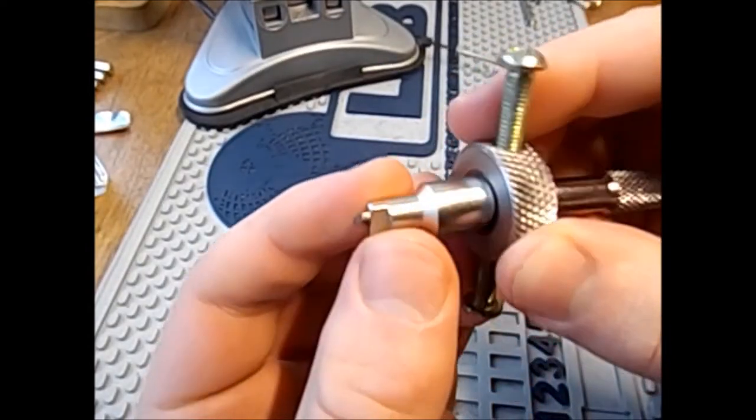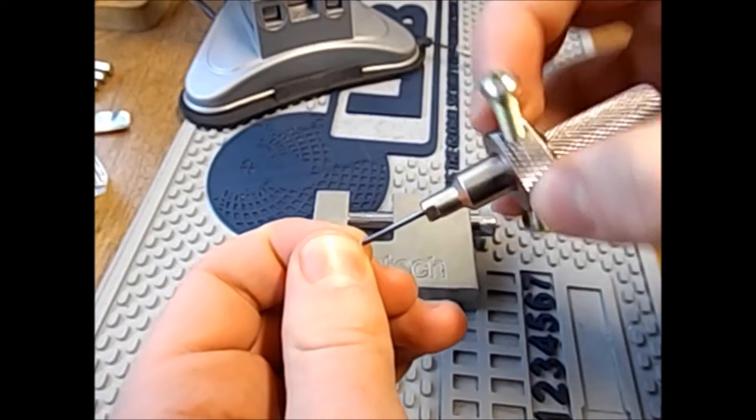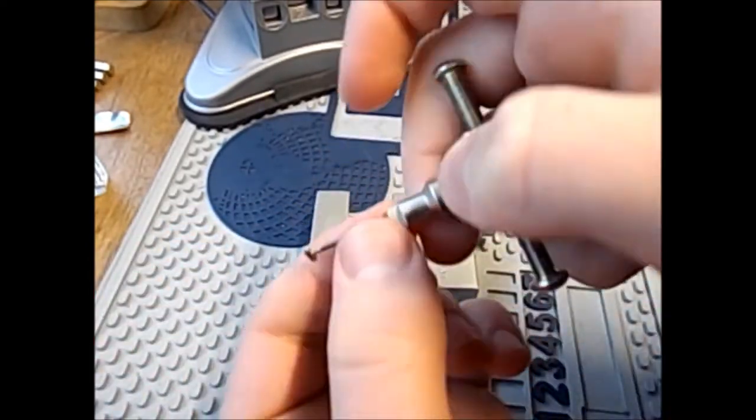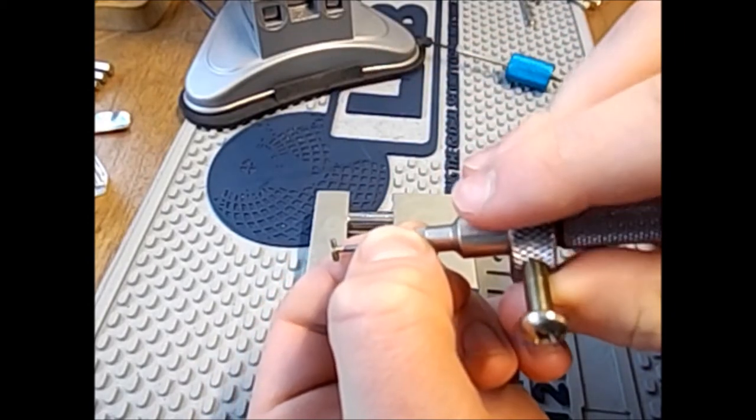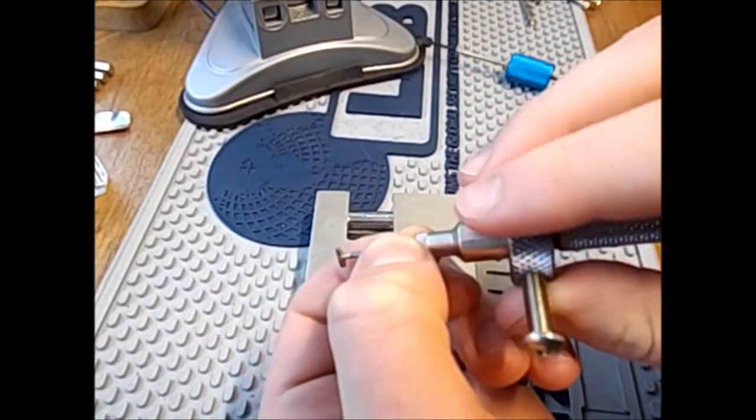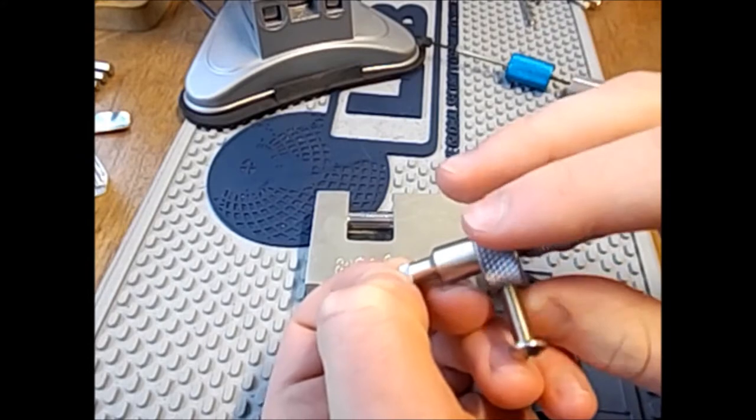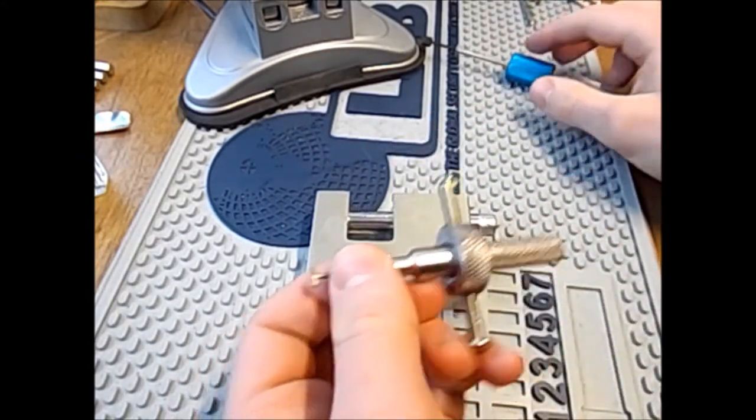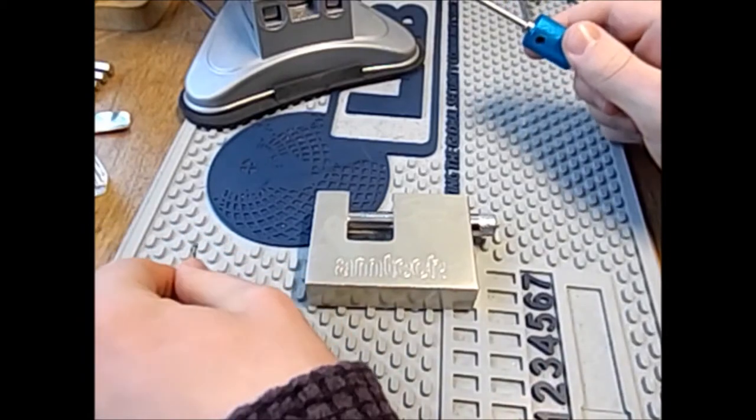And we have another portion here. This is what you use to tension the lock. This bit basically slots in and catches on the first disk in the lock. And the first disk, if you apply tension to the first disk in the lock, that's how you tension all the disks basically.